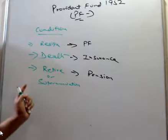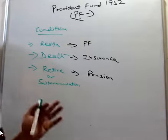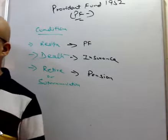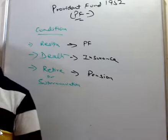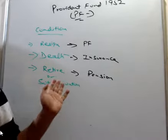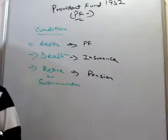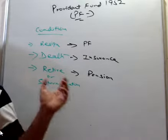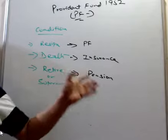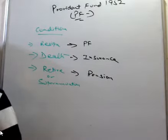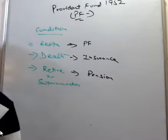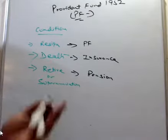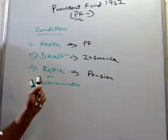In the government there is job security, but in private, the government has made this concept that Provident Fund will save in case of emergency, in case of death, in case of retirement. You have some money in your account so that you can run your home. That's why the PF Act.